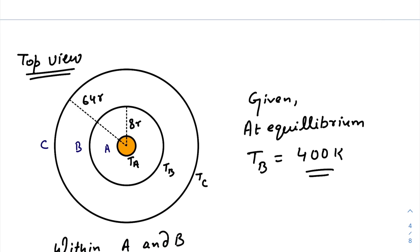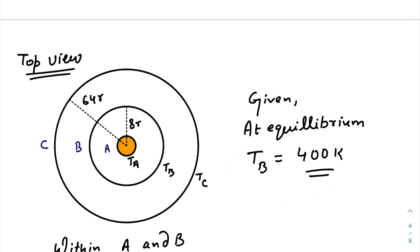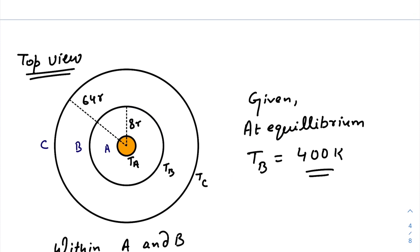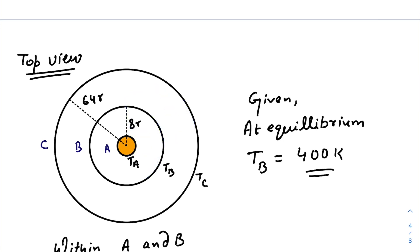Now let's come to the actual question. This is the top view of three concentric cylinders. The innermost one is actually a wire carrying current I, which is the main source of power being emitted. This will increase the temperature of shell B and eventually shell C. At equilibrium, the temperature of shell B is given as 400 K. At equilibrium, the energy received per unit time between the wire/cylinder A and cylinder B must equal that between B and C, which must also equal that between C and the surroundings.